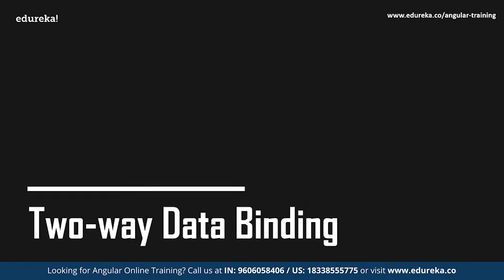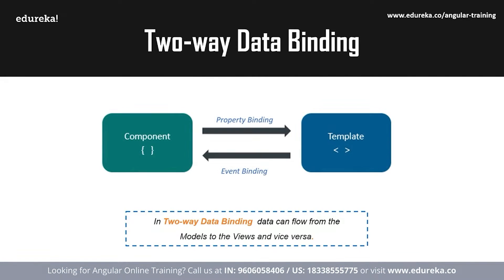Moving on towards two-way data binding in Angular — basically whenever event binding occurs, an event handler will be set by Angular for the target event. When that particular event gets raised, the template statement is executed by the handler. Generally, template statements perform actions in response to the event, and event binding is used to convey information about the event — these data values include anything such as strings, objects, etc.